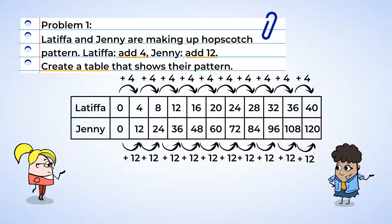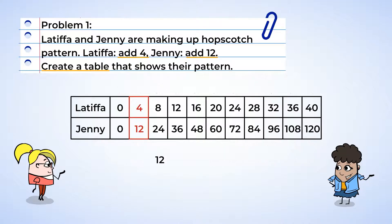Now that the table is filled out, let's compare some of the numbers for each pattern. How does the number in Jenny's second box compare to the number in Latifah's second box? Well, Jenny has a 12 and Latifah has a 4. If you add 8 to Latifah's 4, we can get to Jenny's 12. But how else can we get to 12? That's right, by multiplying Latifah's 4 by 3.